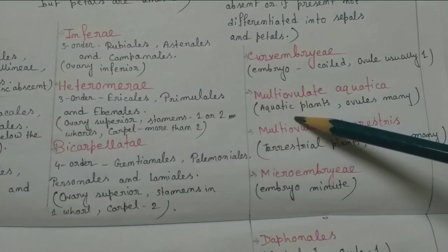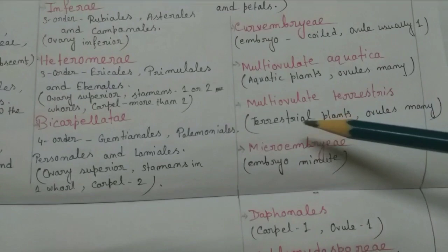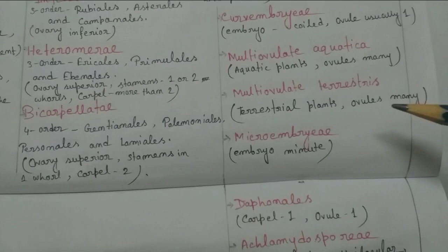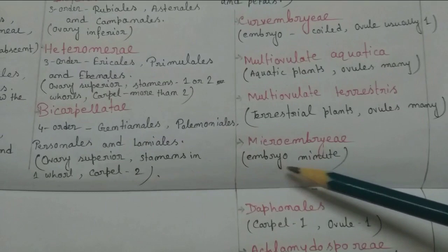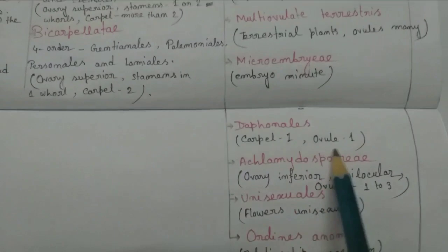Multiovulate Aquaticae: they are aquatic plants and ovule number is many. For Multiovulate Terrestriales, those are terrestrial plants and ovules many. Fourth, Microembryeae, where the embryo is minute.